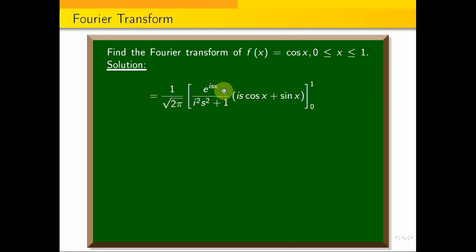If we substitute the limits, we will get the answer. 1/√(2π), e^(is)/(1 - s²) times (is cos 1 + sin 1) minus e^0/(1 - s²) times (is cos 0 + sin 0). e^0 equals 1, i² equals minus 1.